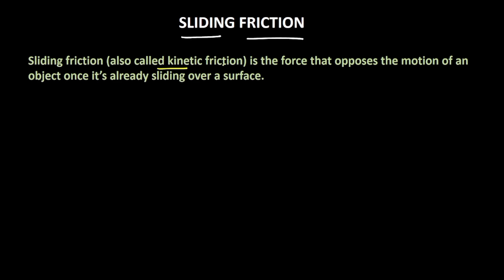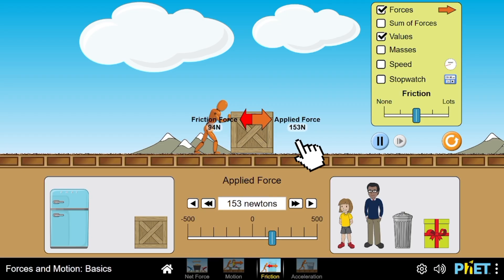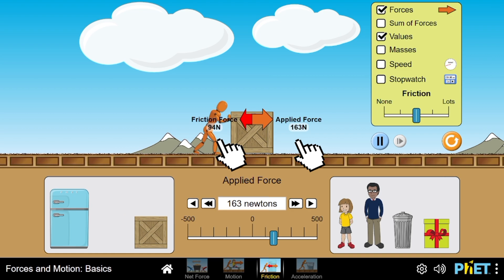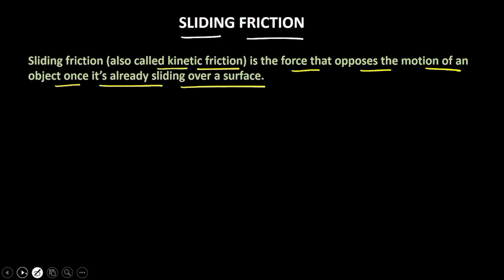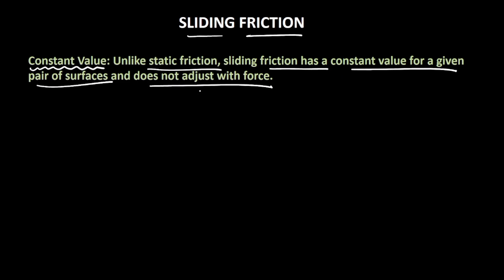The friction that comes into picture at this point is called the sliding friction, also called the kinetic friction, which is the force that opposes the motion of an object once it's already sliding over the surface. Even if I increase the applied force, the sliding friction value is not increasing — it remains the same. Unlike static friction, the sliding friction has a constant value for a given pair of surfaces and does not adjust with the applied force.